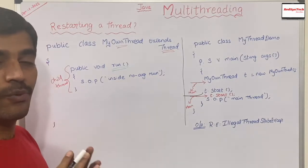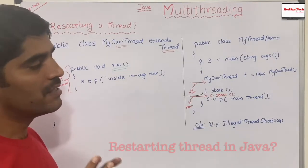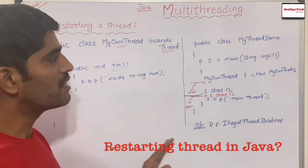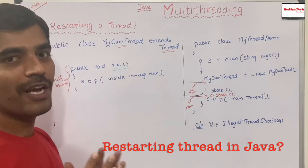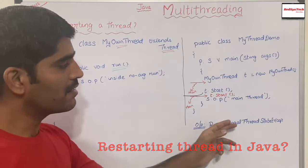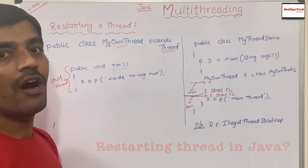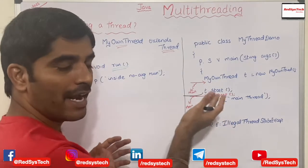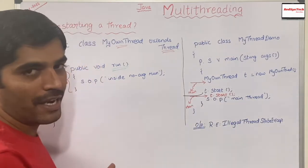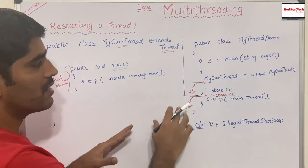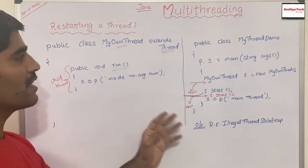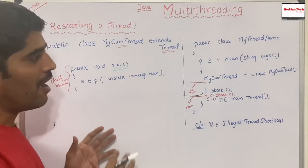So if anyone asks in a Java interview how to restart the same thread, you can say there is no way to do it. If they ask what will happen if you try, you say it will throw a runtime exception: IllegalThreadStateException. Once a thread gets started, that's it — you cannot restart it. Now I'm going to write the same program and show you the output in real time.